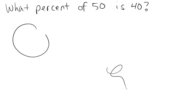One last example you might have is something like what percent of 50 is 40. Draw the circle. And remember right off the bat, you want to look for that percent symbol. I don't see the symbol. Instead, I see the word percent. So that means the percent part is the part that's missing.